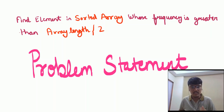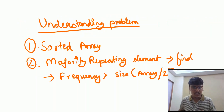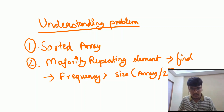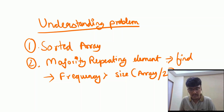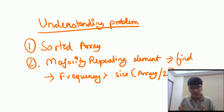As stated, we have a sorted array and we have to find a majority repeating element such that the frequency should be greater than half the length of the array. There are two key takeaways: first, the sorted array, and second, the majority repeating element.